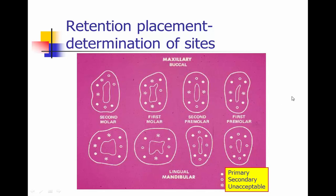Here's an example of retention sites. The solid circles are primary sites at the line angles. Secondary sites are the open circles. For molars and premolars, any place you see a star marks an area of concavity — these are unacceptable sites for placement. Study these images; they correlate with what you know about dental anatomy of these teeth.